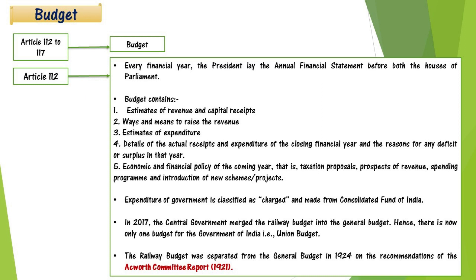The expenditure of the government is classified as charged and made from the Consolidated Fund of India — expenses from the Consolidated Fund of India are specified. In 2017, the central government merged the Railway Budget into the General Budget, so now there is only one budget, which is the Union Budget. The Railway Budget was separated from the General Budget in 1924 on the recommendation of the Acworth Committee Report of 1921.